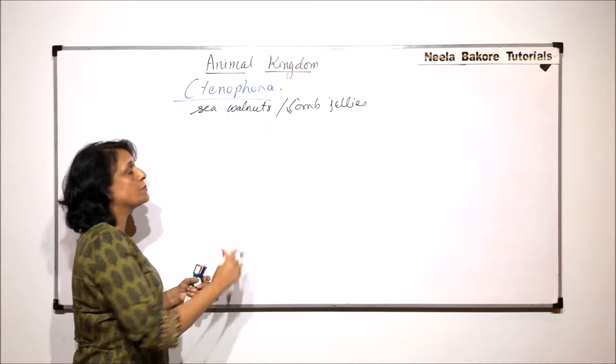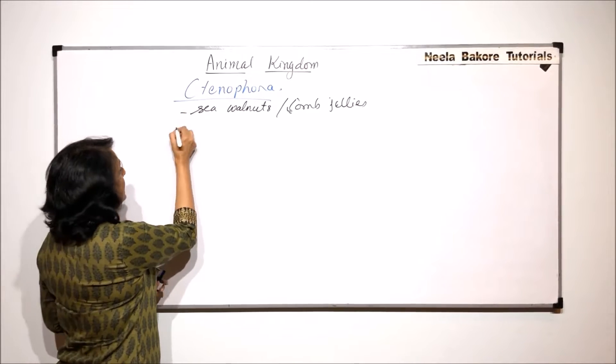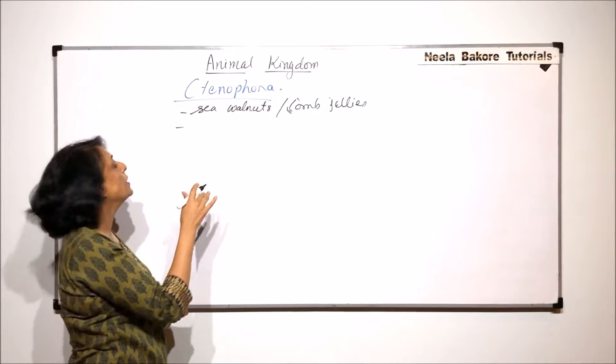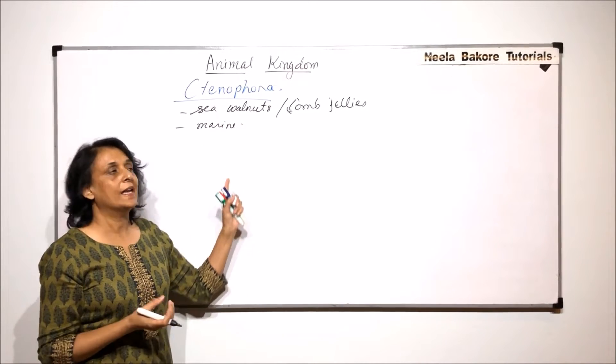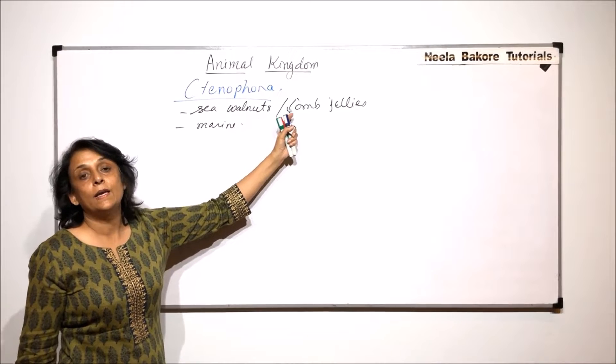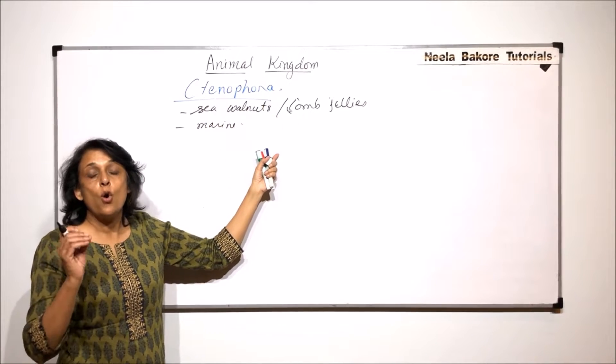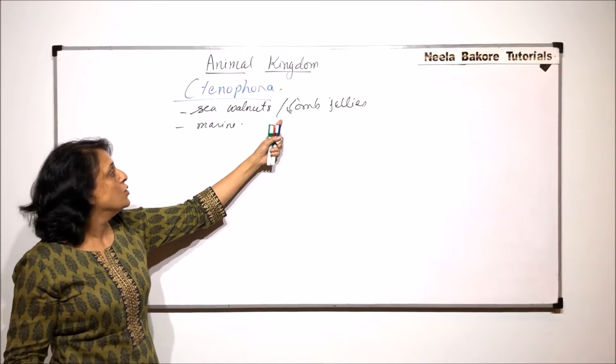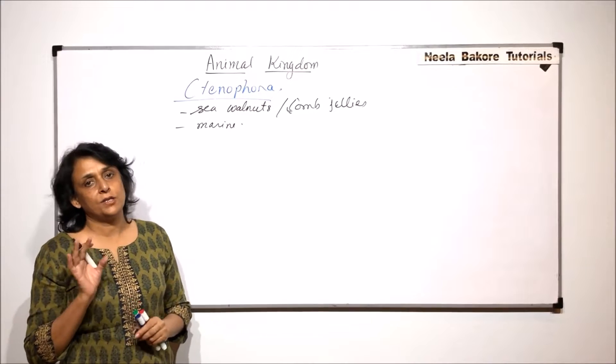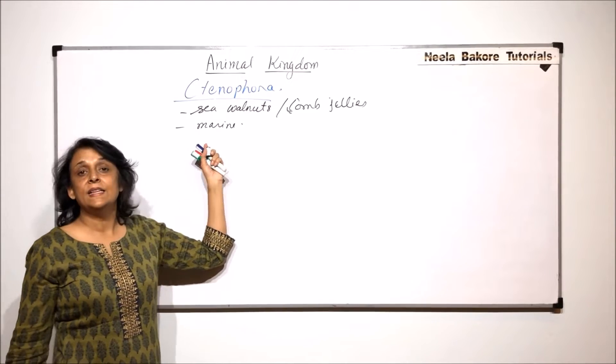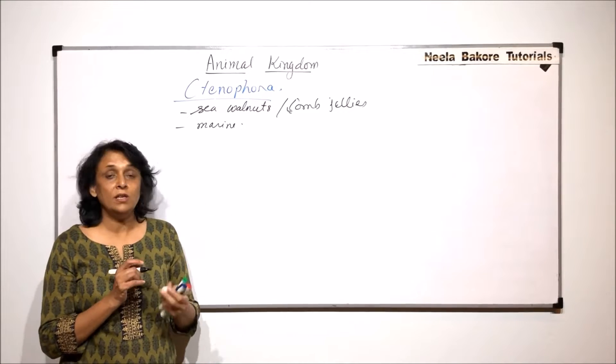That is why they are commonly known as sea walnuts and comb jellies. Sea walnuts because they are exclusively marine - there is no freshwater member - and the shape is walnut-like. Comb because this means comb bearing. Jellies because the body is jelly-like, more or less transparent. These names are given keeping in mind their special features.